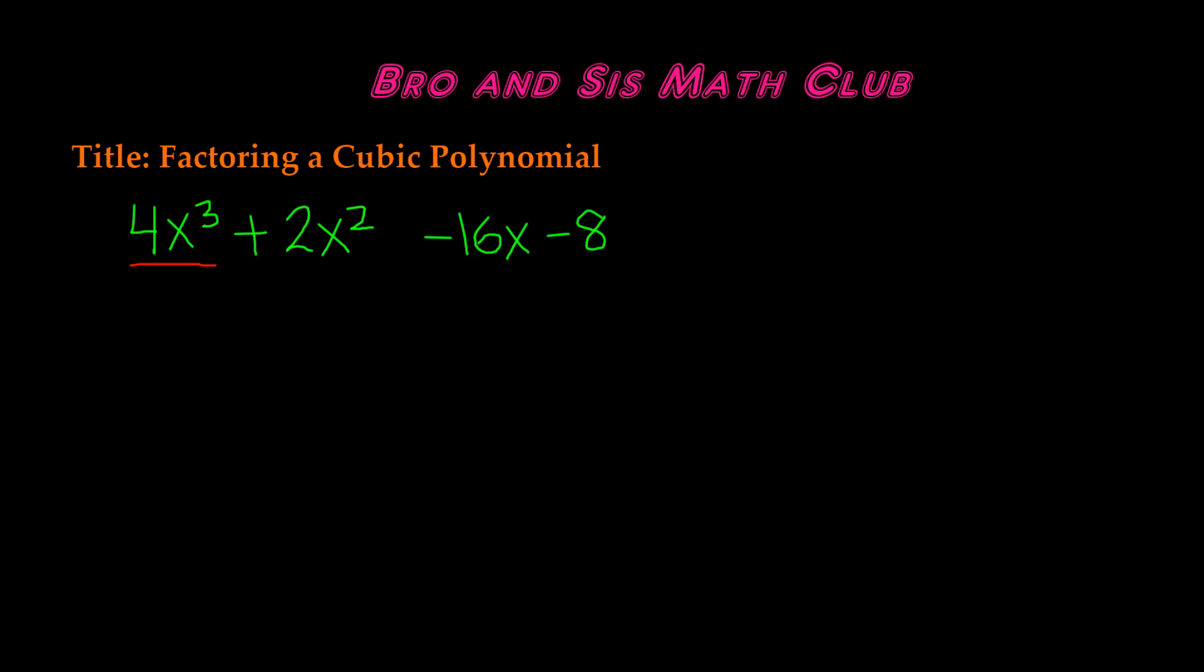So since we have four terms, we can go ahead and make two sets of binomials. We will have 4x³ and 2x² in one set of parentheses, and we will have -16x and -8 in another set of parentheses.